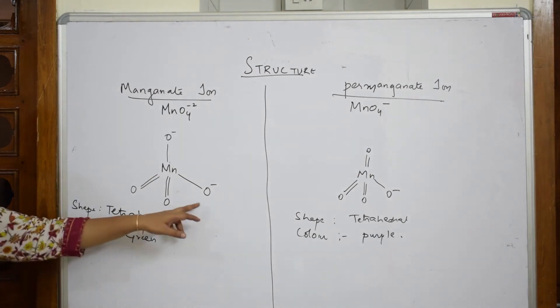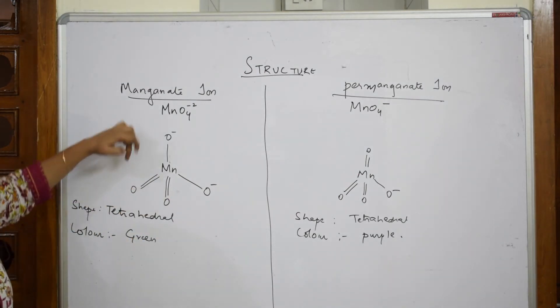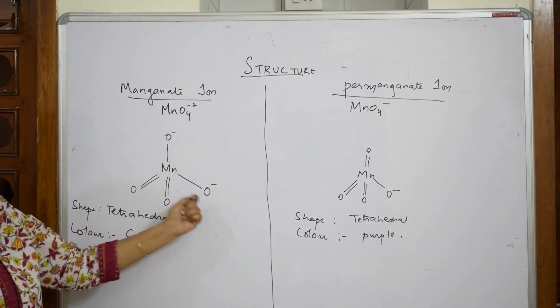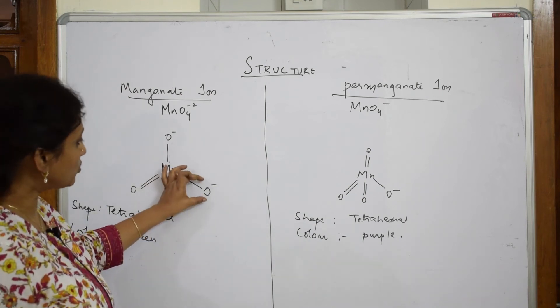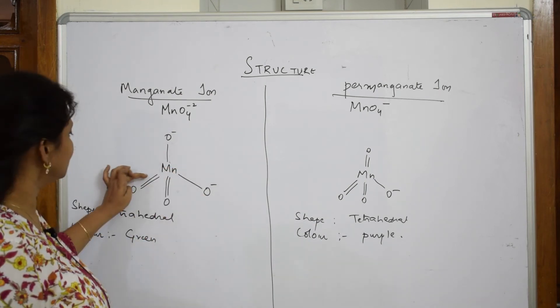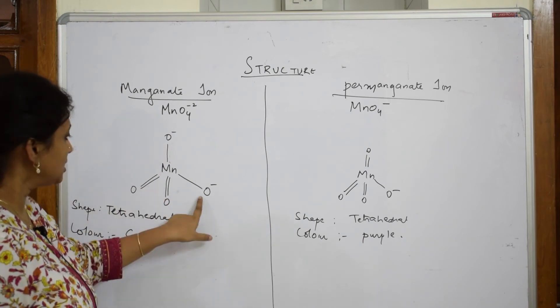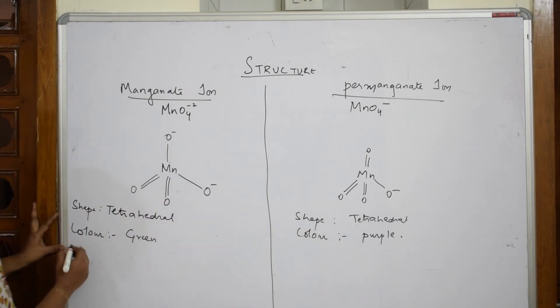Next important. When I see the structure, this is going to show resonance. How many unpaired electrons does it have? It has one unpaired electron. Because this is going to shift here, this is going to shift here.